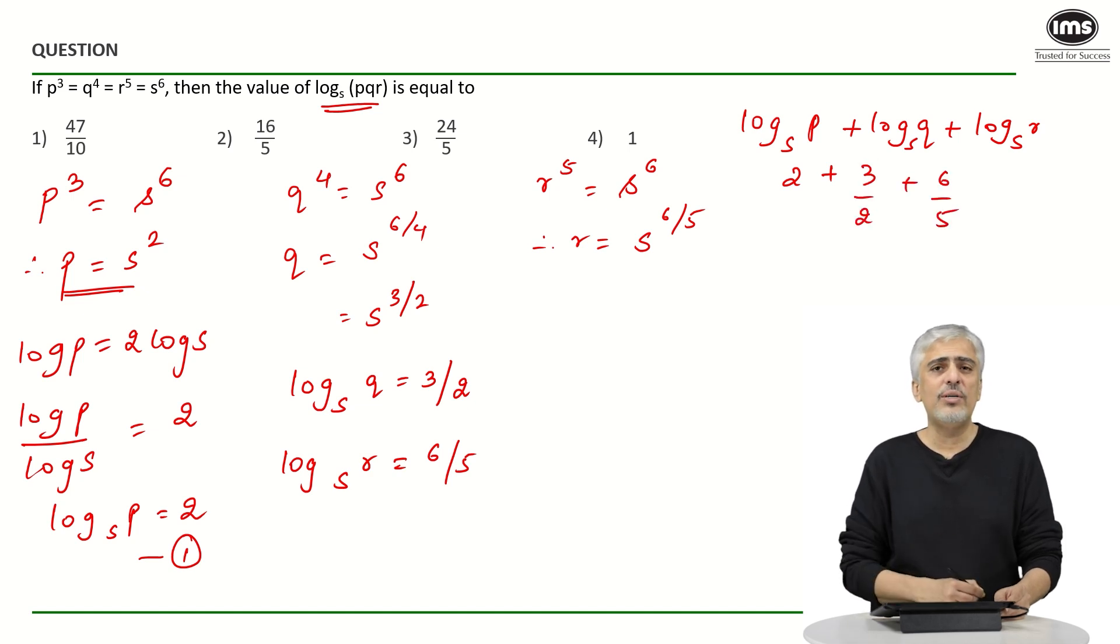Even if you convert it to decimal and do it orally instead of LCM, that is also very simple. 2 plus 1.5 is 3.5. 3.5 plus 1.2 is 4.7, which is nothing but 47 by 10 as in the options, the first option.